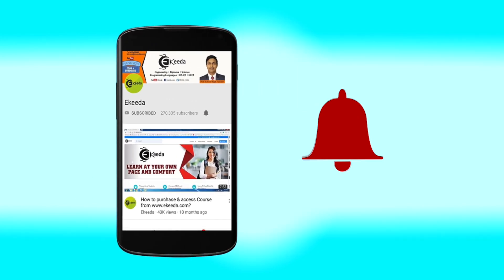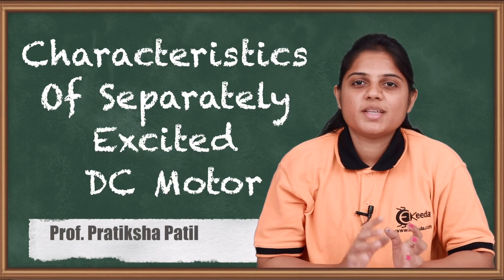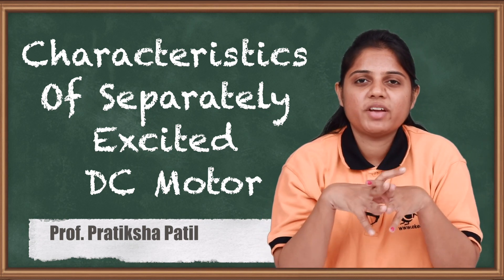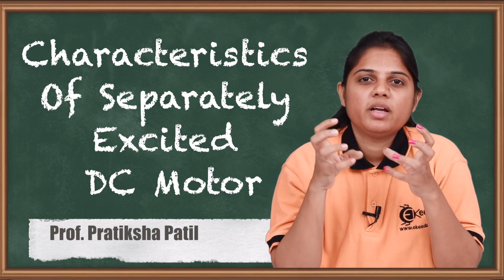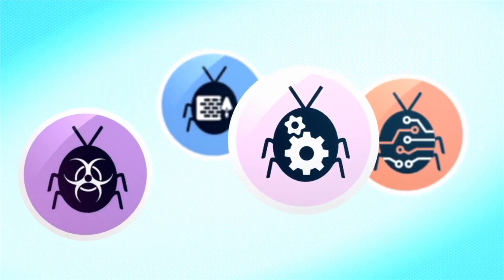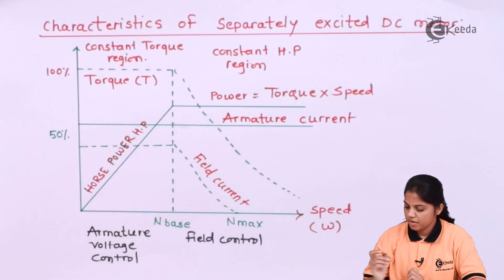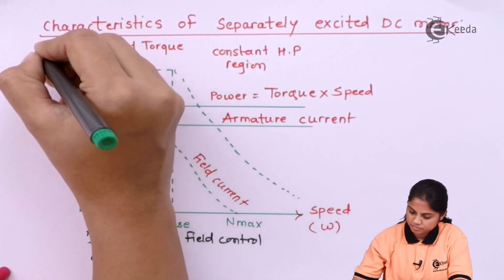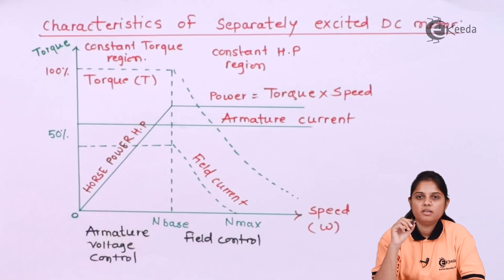Hello friends, in this video we are going to see the characteristics of a separately excited DC motor. We have seen the separately excited DC motor in a previous video — we have seen the diagram, the parameters, and the two major modes of operation. Now we are going to see the graph for those two modes of operation, where the x-axis is speed and the y-axis is torque.